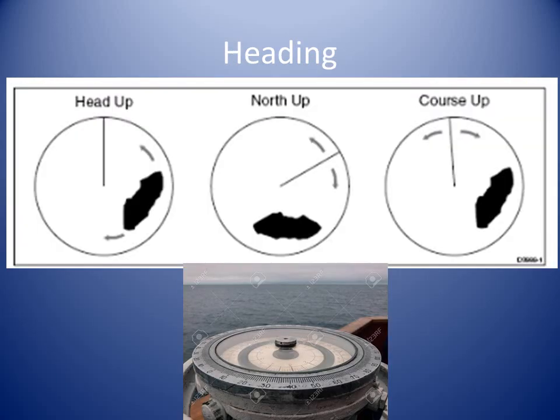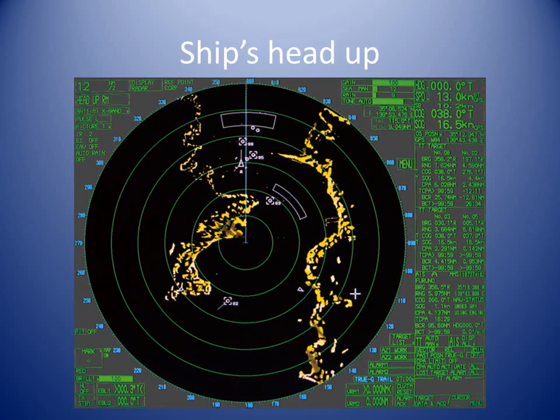There are a few options for heading on a modern radar set, but before selecting your preference, make sure the heading displayed on the radar is aligned with the master gyro and repeaters. The default orientation of a radar screen places the ship's heading at the top of the screen. Any contacts at the upper right represent targets on the ship's starboard bow, whilst those at the upper left are from targets on the port bow. Contacts in the lower half of the screen are from targets somewhere astern of your ship. This basic orientation is termed head up.